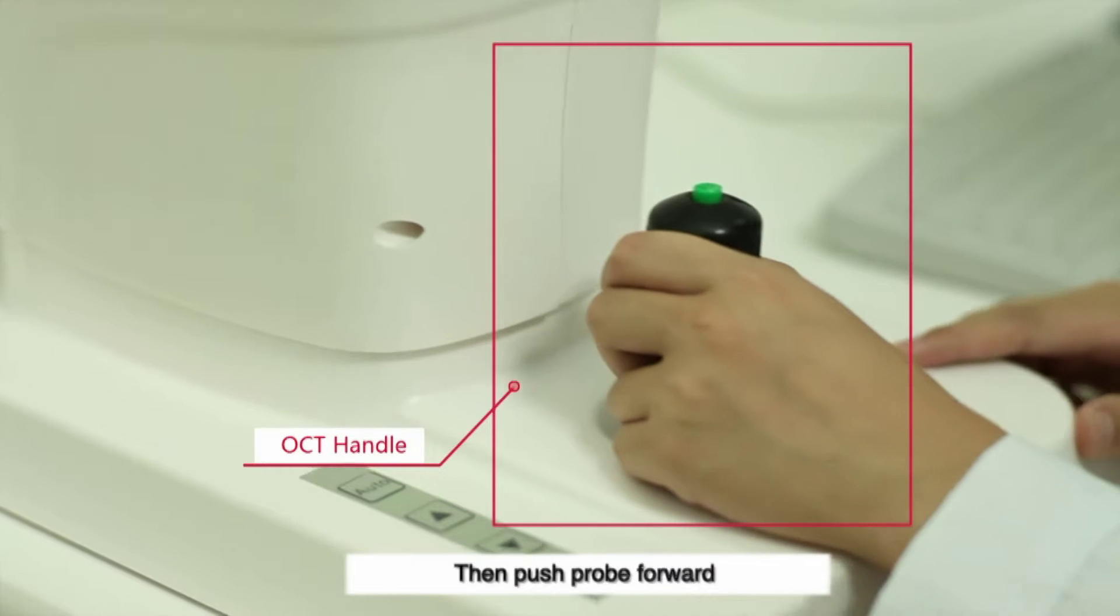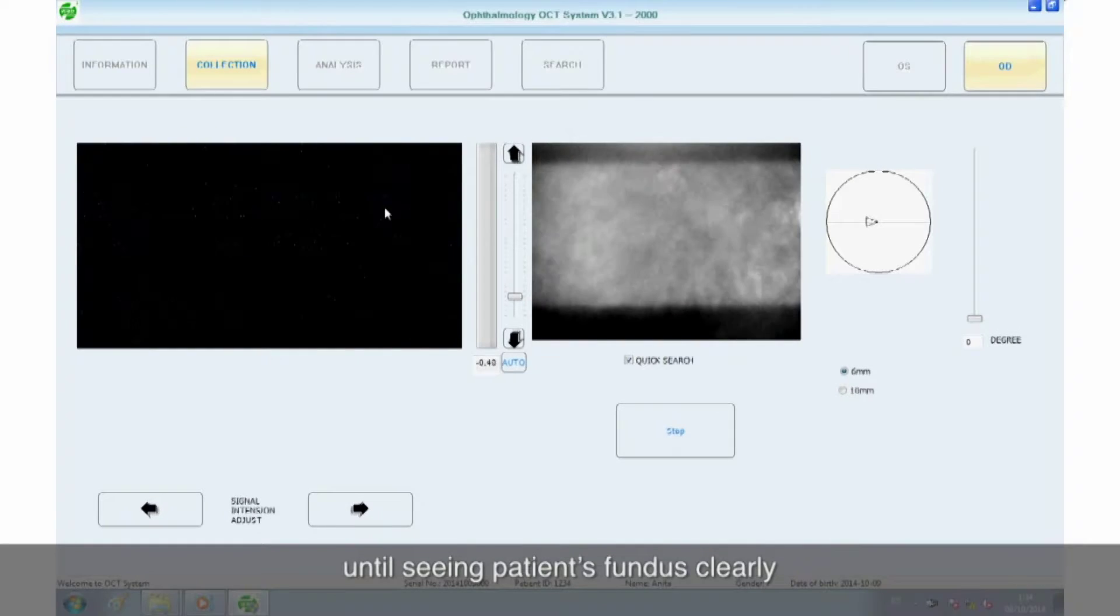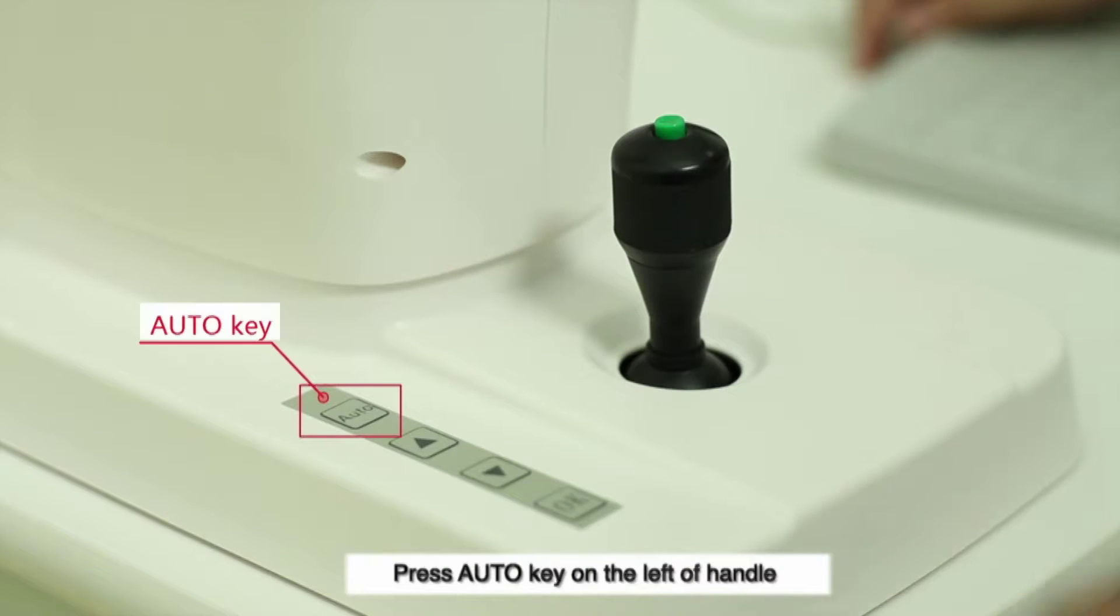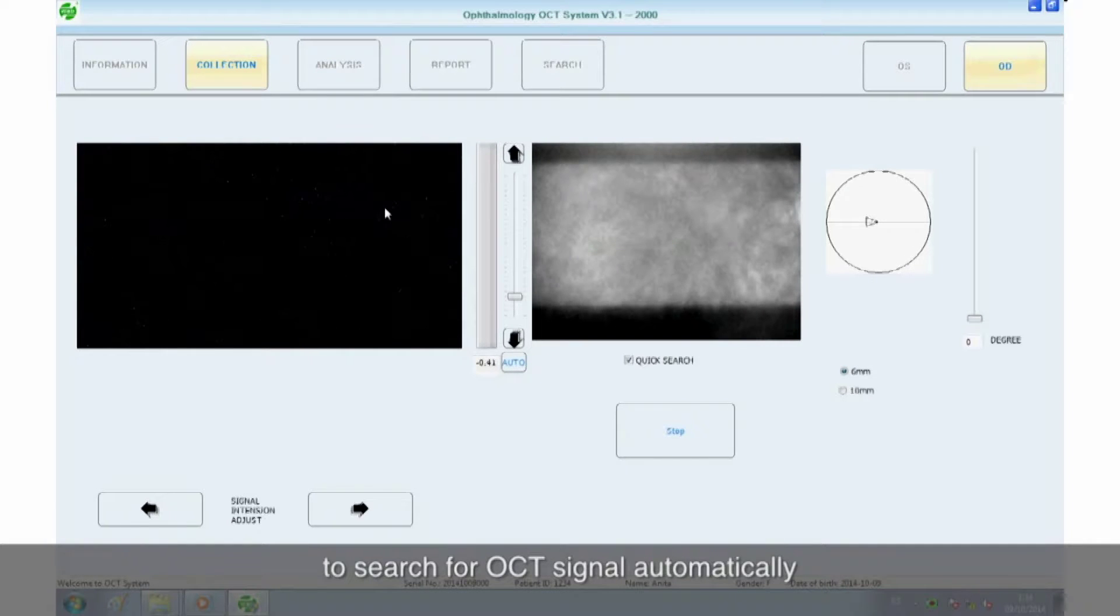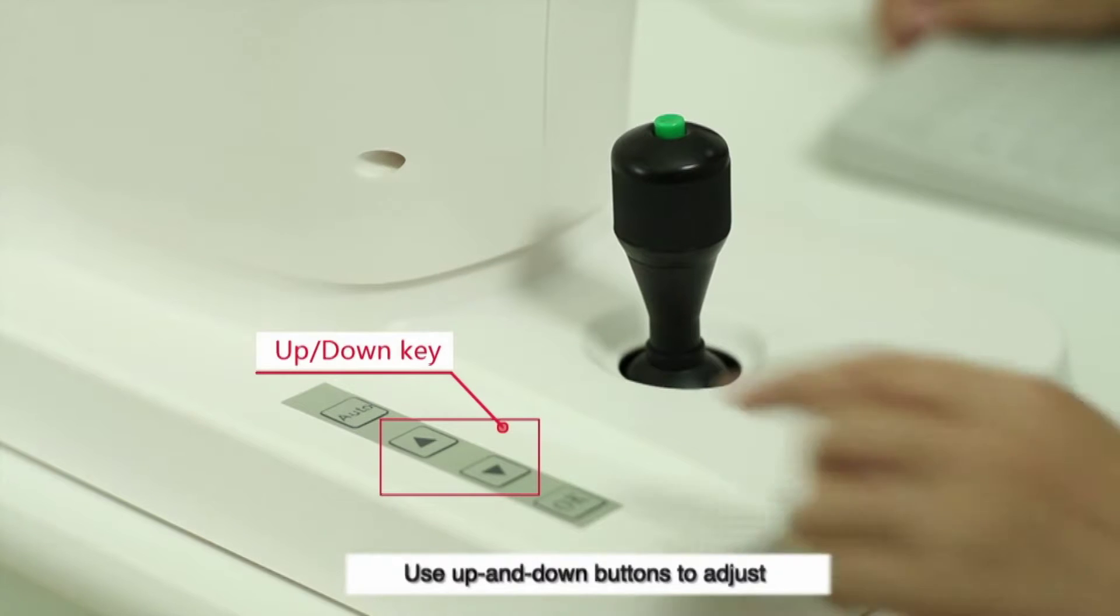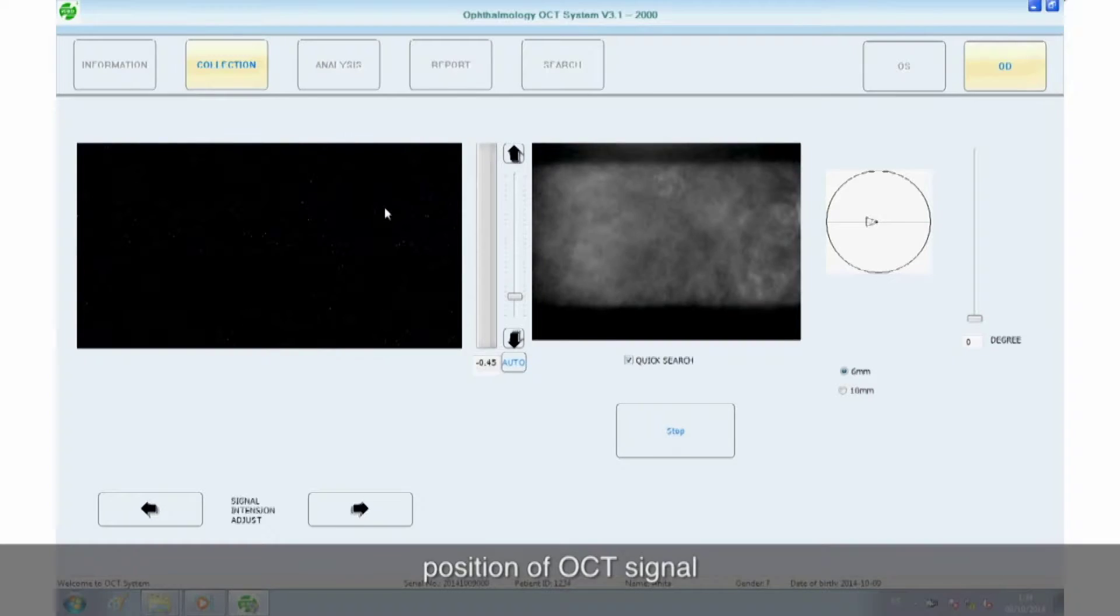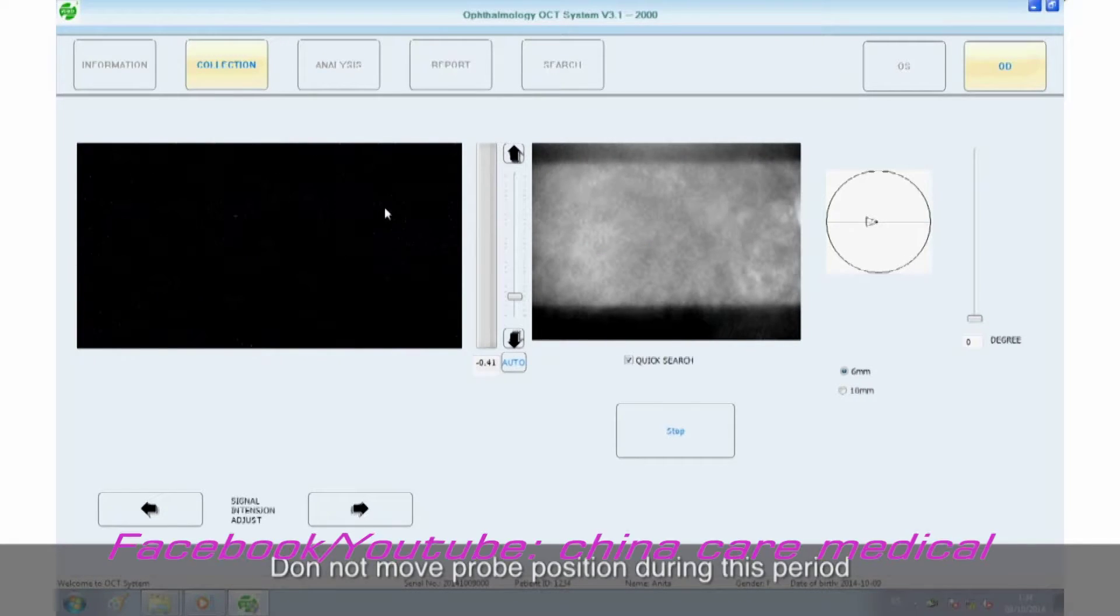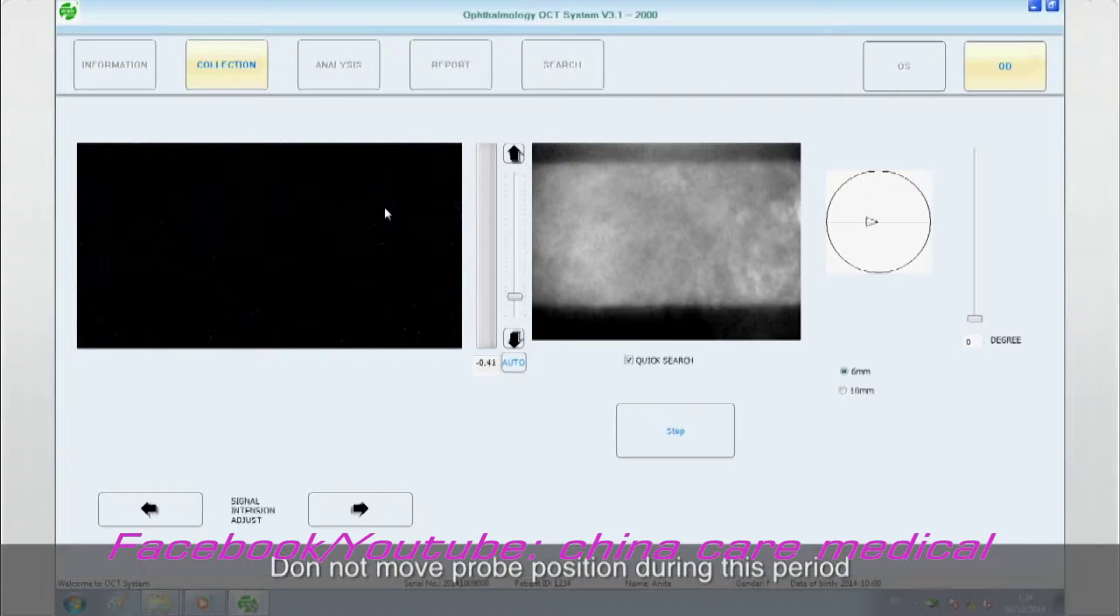Then push probe forward until seeing patient's fundus clearly. Step 2: Press Auto-key on the left of handle to search for OCT signal automatically. Use up and down buttons to adjust position of OCT signal. Do not move probe position during this period.